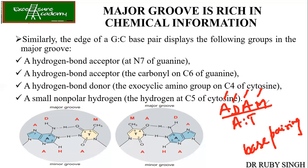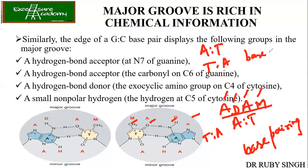Based on these chemical interactions, enzymes are able to differentiate between A-T and T-A base pairing. If MADA is present in the major groove, it means T-A base pairing is present. So enzymes can distinguish A-T from T-A based on these chemical codes.